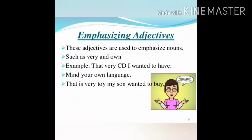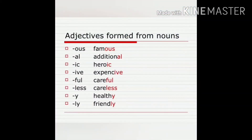Now let's talk about proper adjectives. Proper adjectives are formed from proper nouns — the nouns that give a specific name. For example: 'I love Shakespearean dramas,' 'my uncle married an Irish woman,' 'I love to have Indian cuisine.' The words 'Shakespearean,' 'Irish,' and 'Indian' are proper adjectives because they are formed from proper nouns like Shakespeare, Ireland, and India.